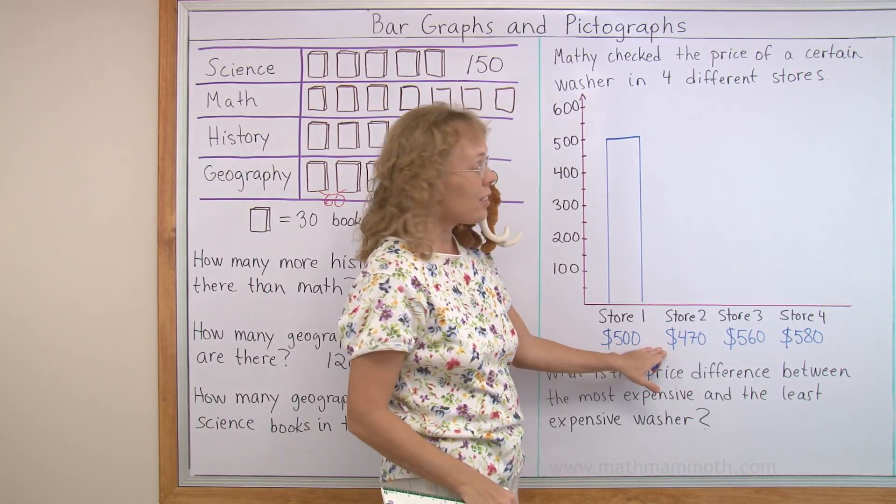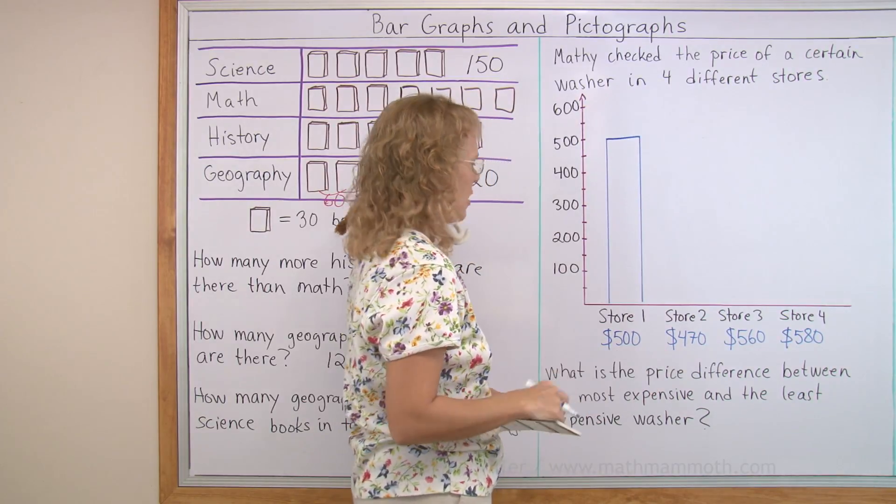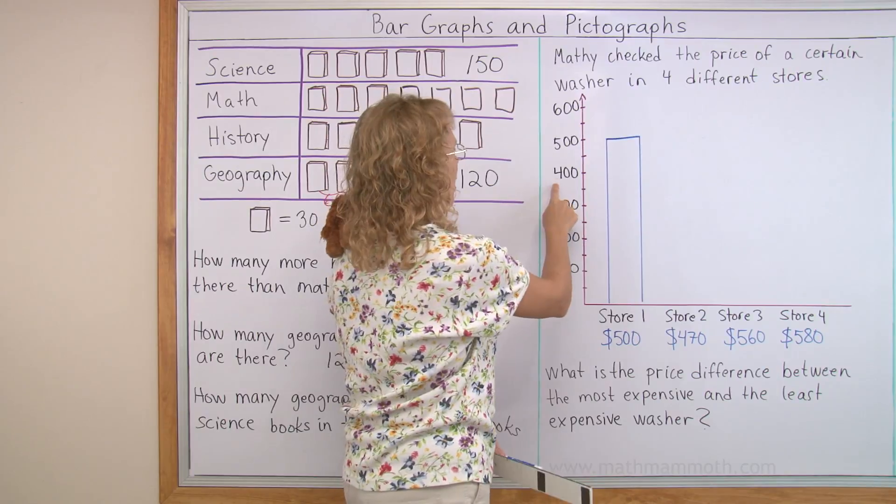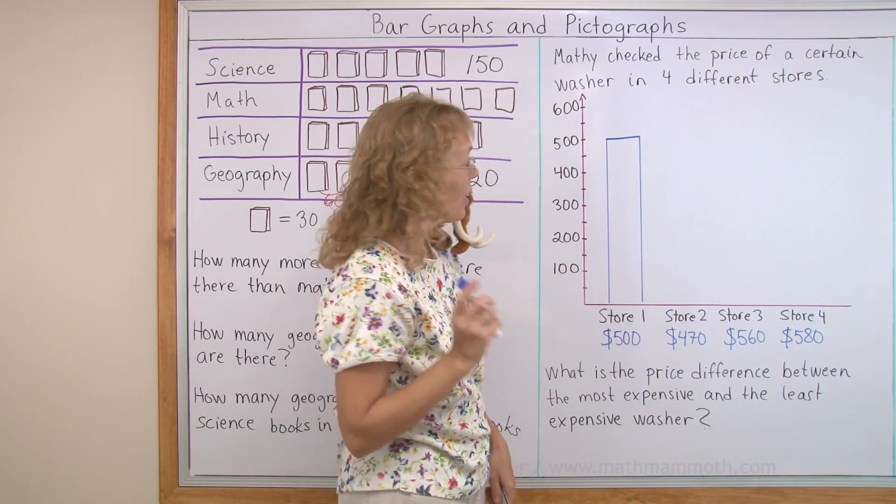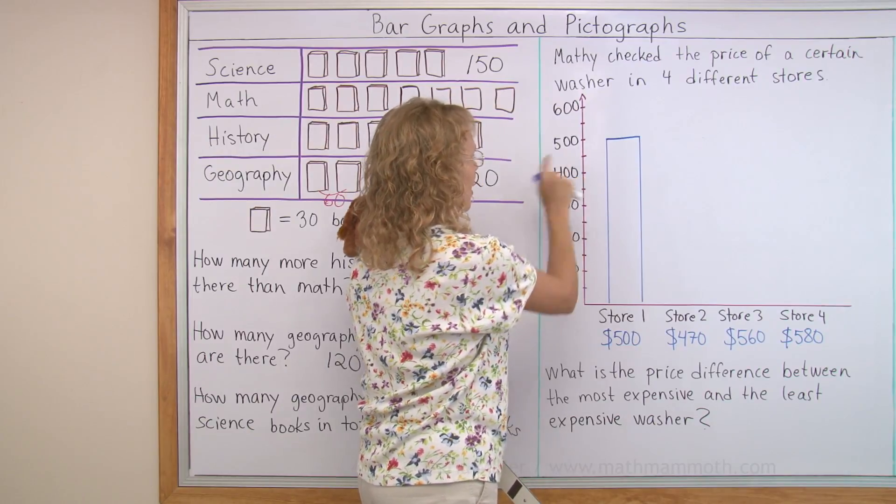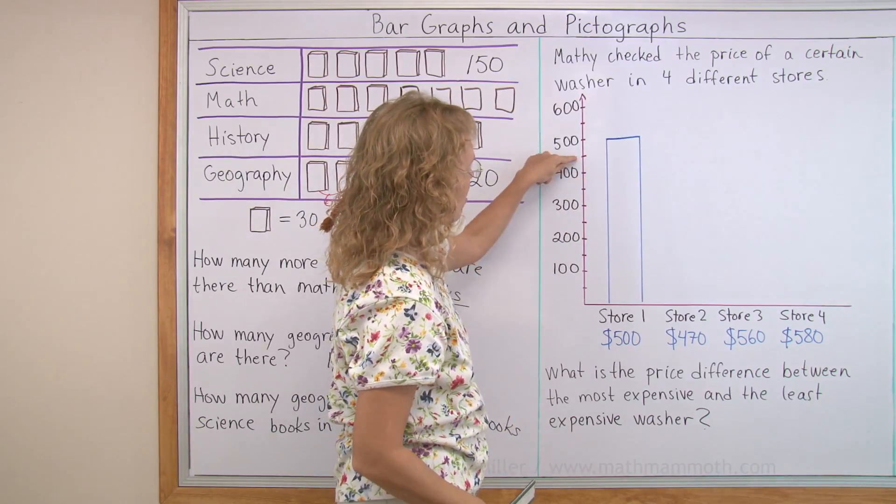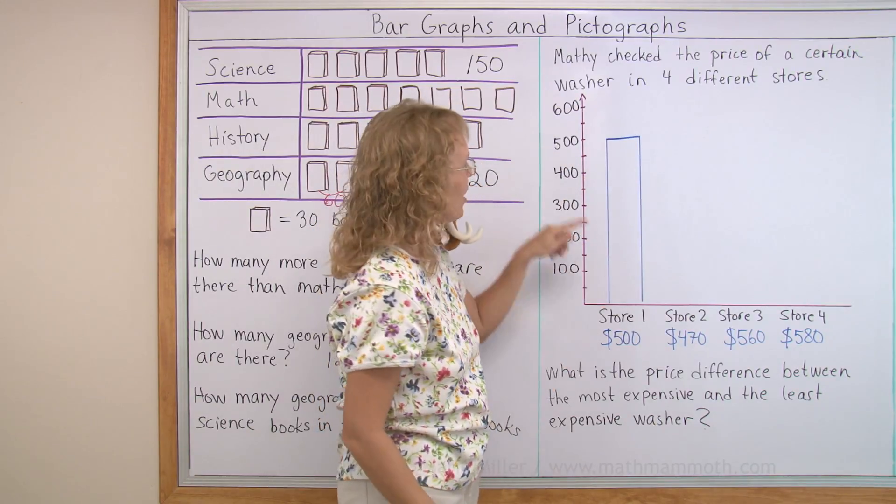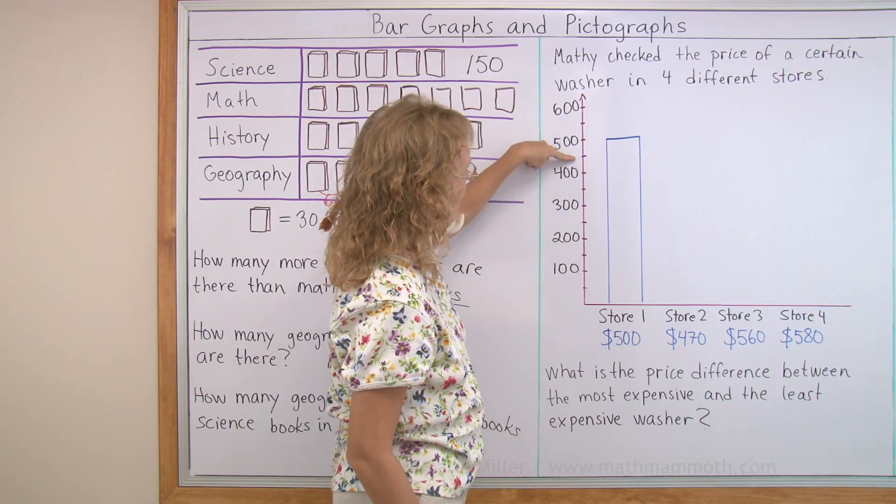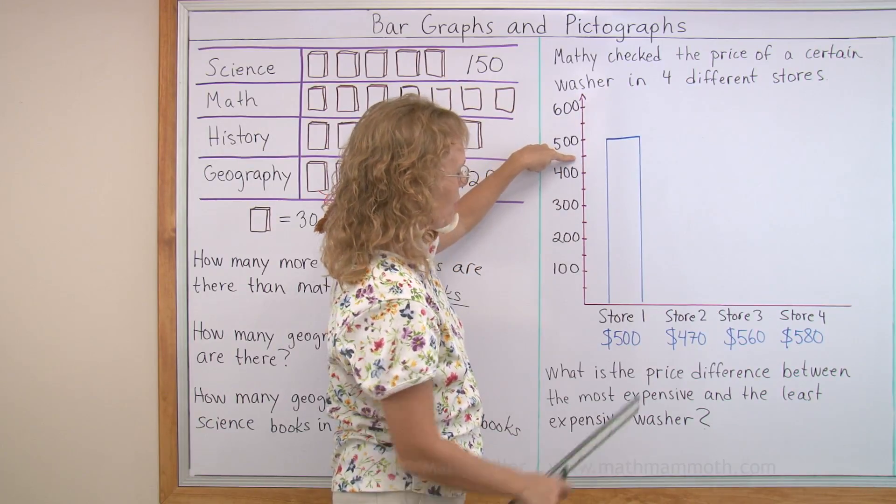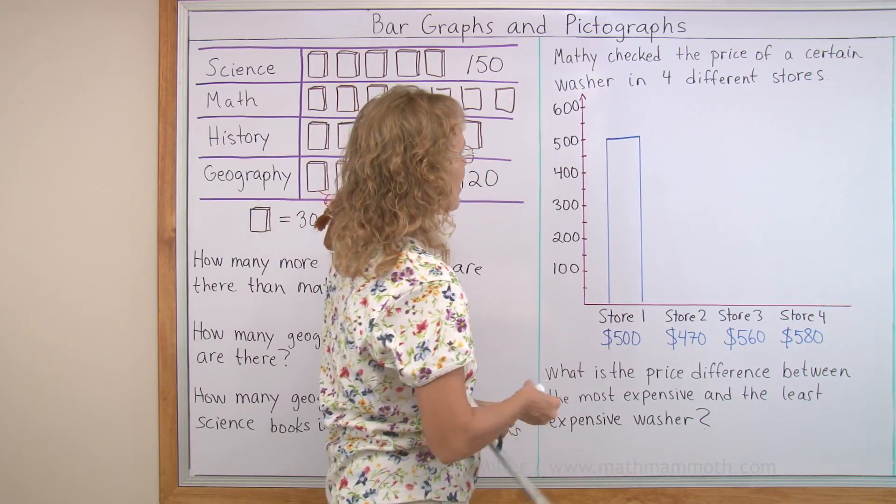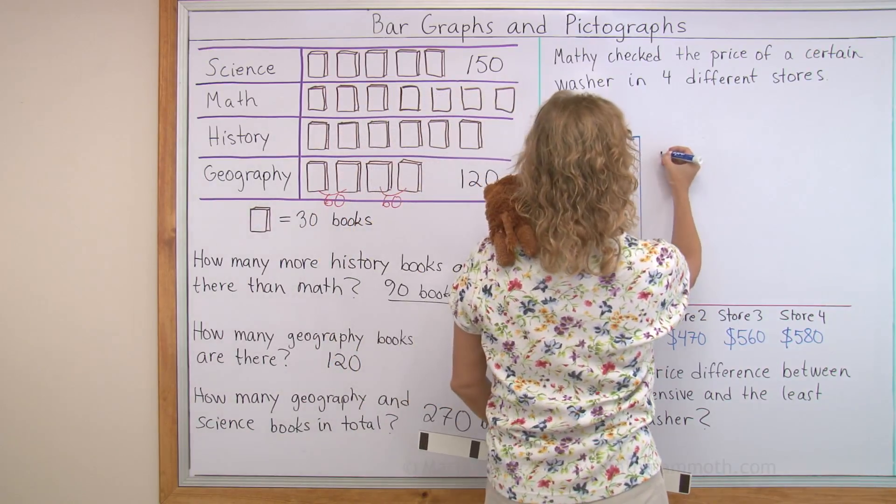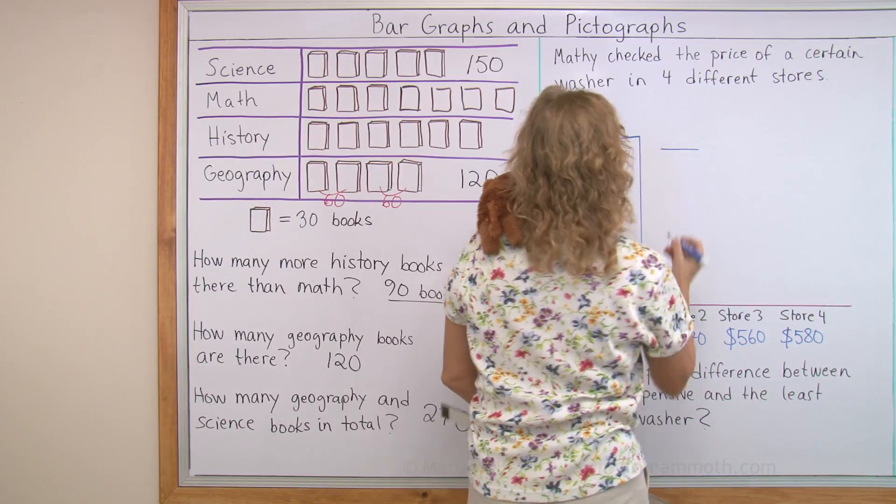Store two, $470. But I don't have $470 here. So what do I do now? This mark here is for the halfway point between 400 and 500. So that would be 450, right? 470 is just a tad more than that. Somewhere there. So try to put it somewhere there.